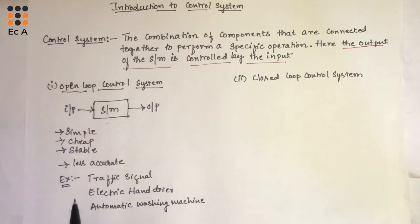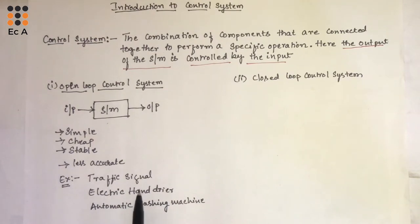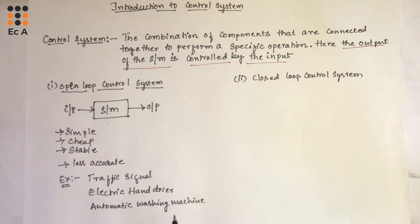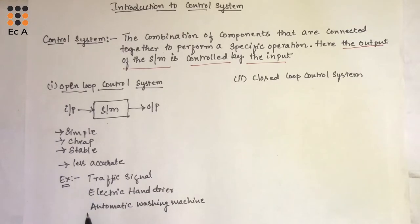Examples of open loop control systems are traffic light signals, electric hand dryers, and automatic washing machines. In all these three examples, you are just providing the input and, based on that, it gives the output.